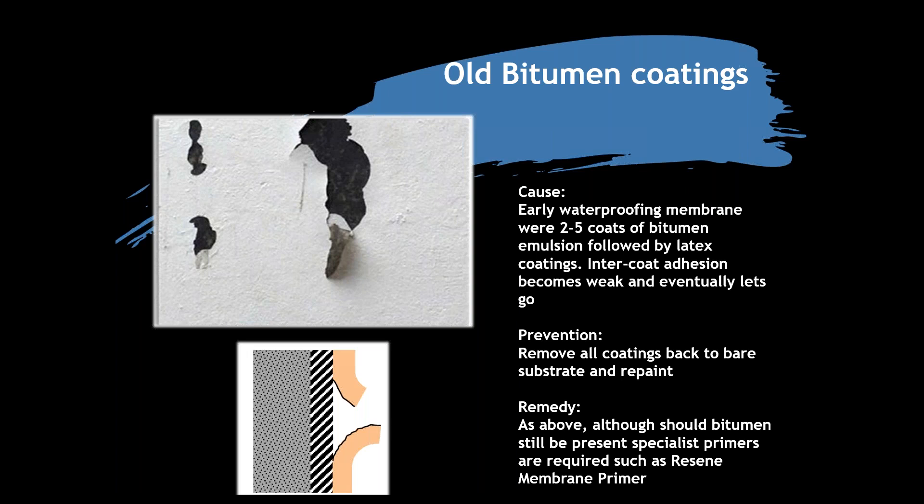Old bitumen coatings are common from the era when bitumen emulsion was all we had as a waterproofing membrane — two to five coats of black bitumen emulsion followed by a latex coating. Eventually intercoat adhesion becomes weak, leading to total coating failure on the side of a building. Nowadays we have modern weathertight membranes. To deal with old bitumen you need to strip everything off and remove as much of the black bitumen coating as possible. We have a specialist primer to deal with remaining bitumen, then overcoat with something like Resene X200.